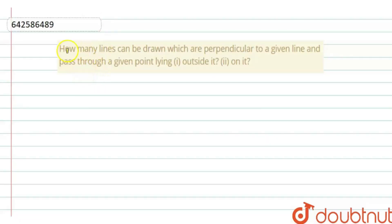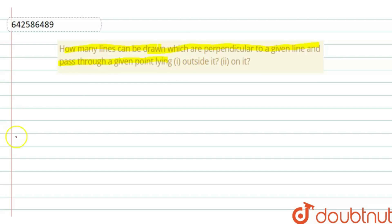Hello everyone. So the question is: how many lines can be drawn which are perpendicular to a given line and pass through a given point? The first part asks about a point outside the line, and the second one is on it. I am considering the first part, which is outside it.